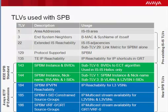The one we have not looked at yet and will cover next is called IP reachability, or TLV 135. This gives the ability for IP reachability or IP shortcuts across SPB — that will be the subject of the next video. In this video, we're focused on the type length values and the link state database, and we'll take a tour at this point.